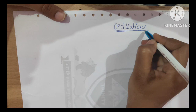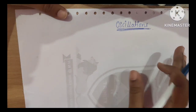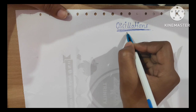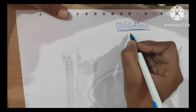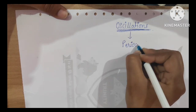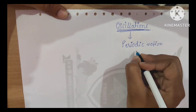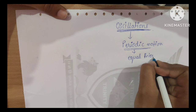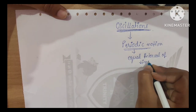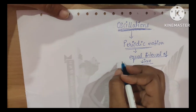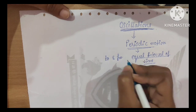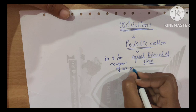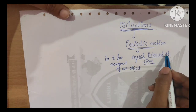The word oscillation — oscillation is a periodic motion. Periodic motion means equal interval of time. There is a to and fro movement of an object after equal interval of time.